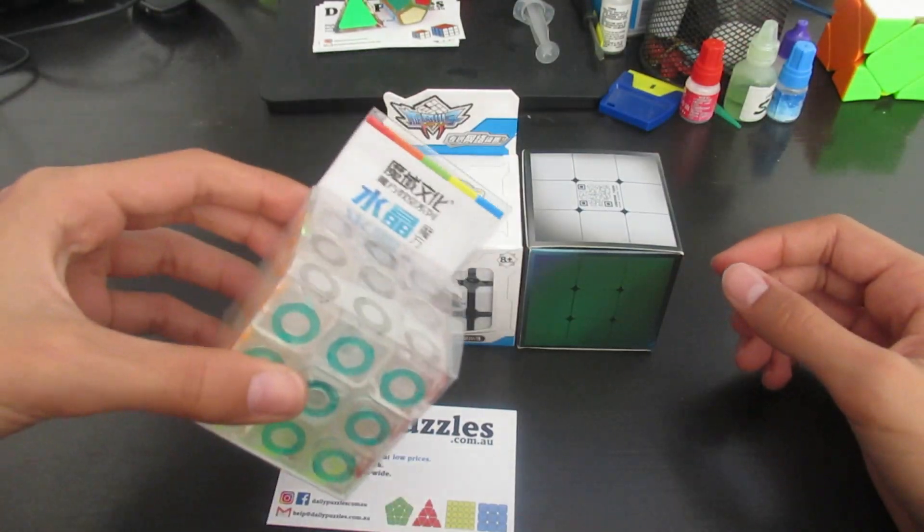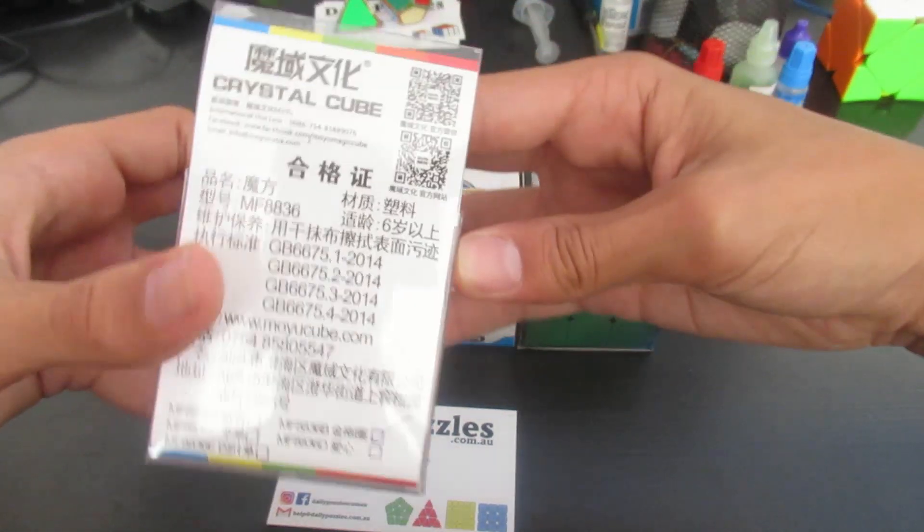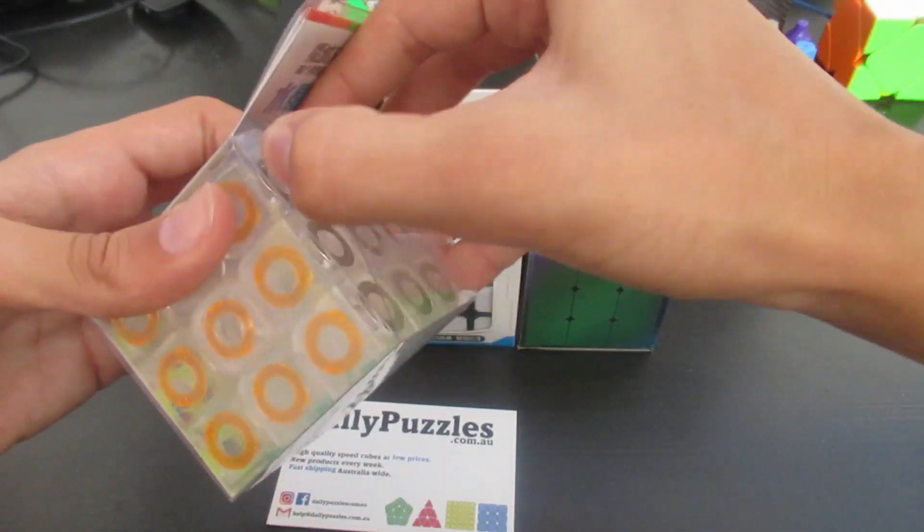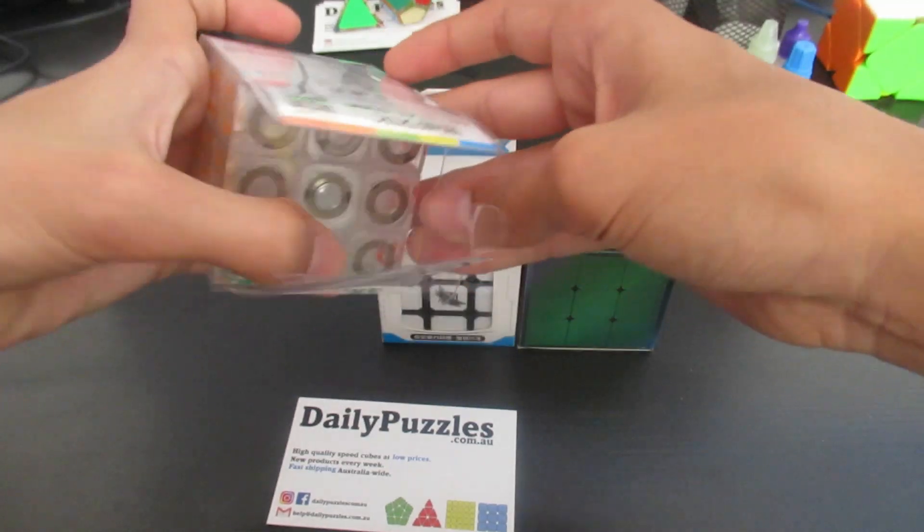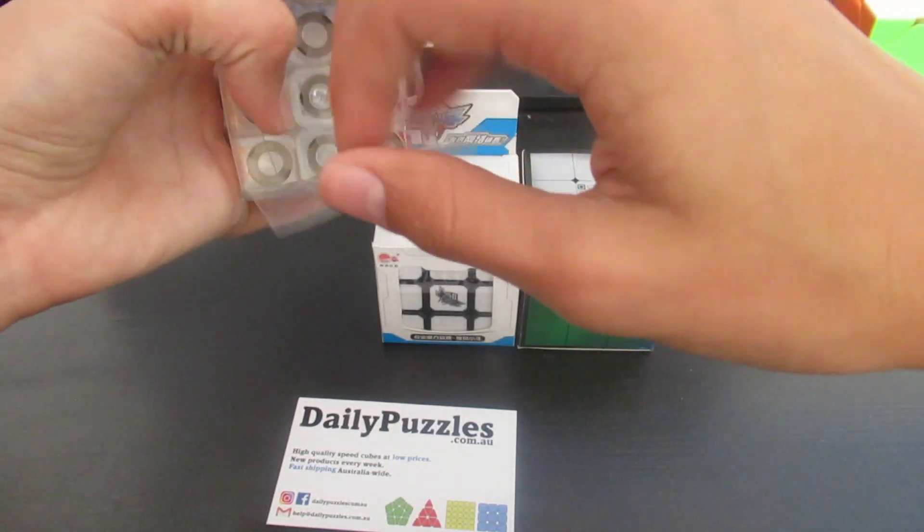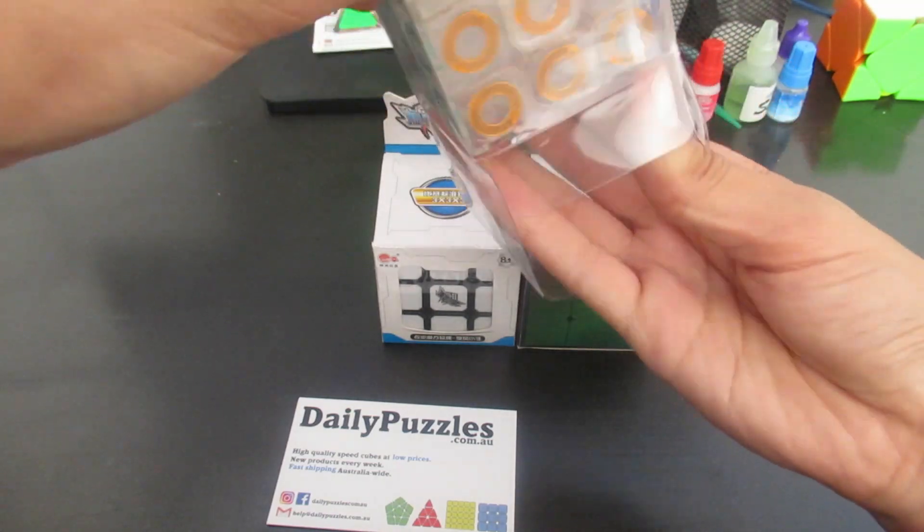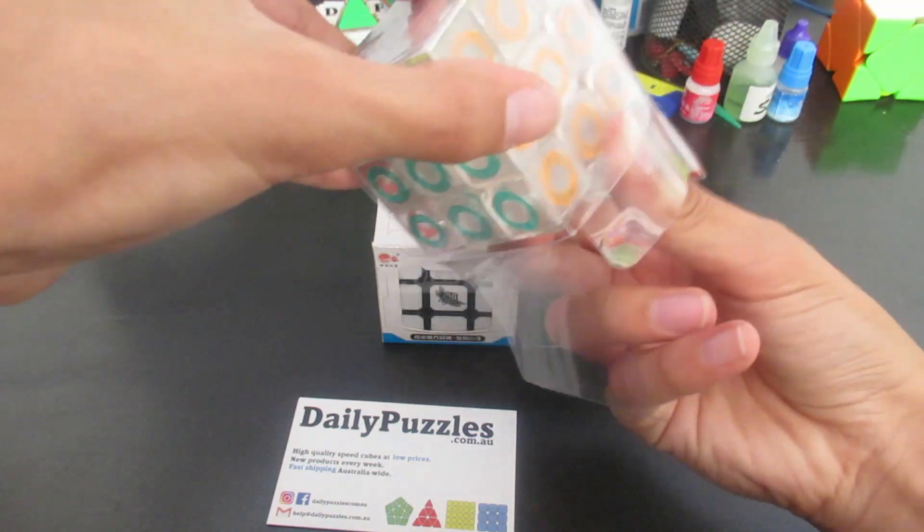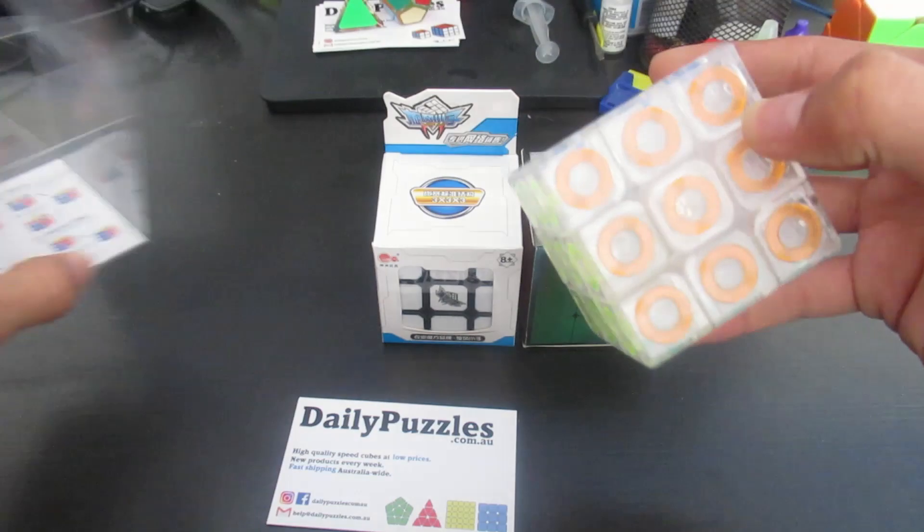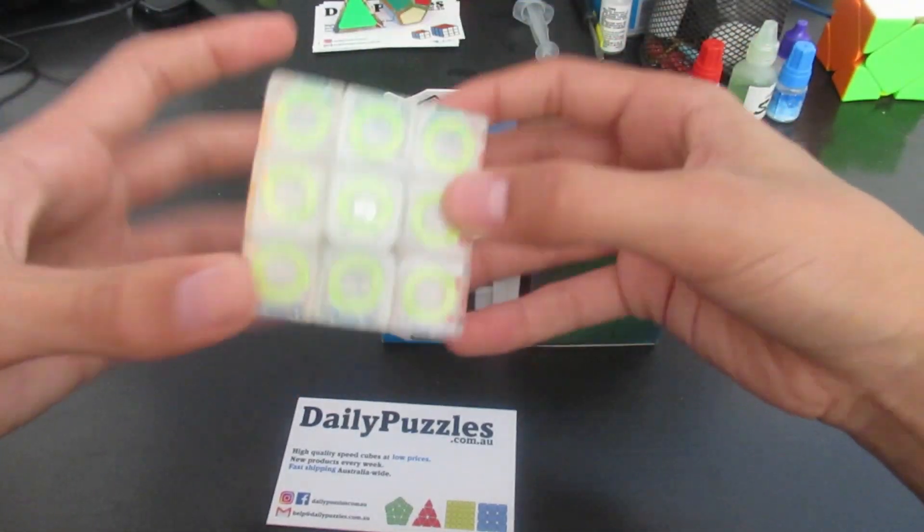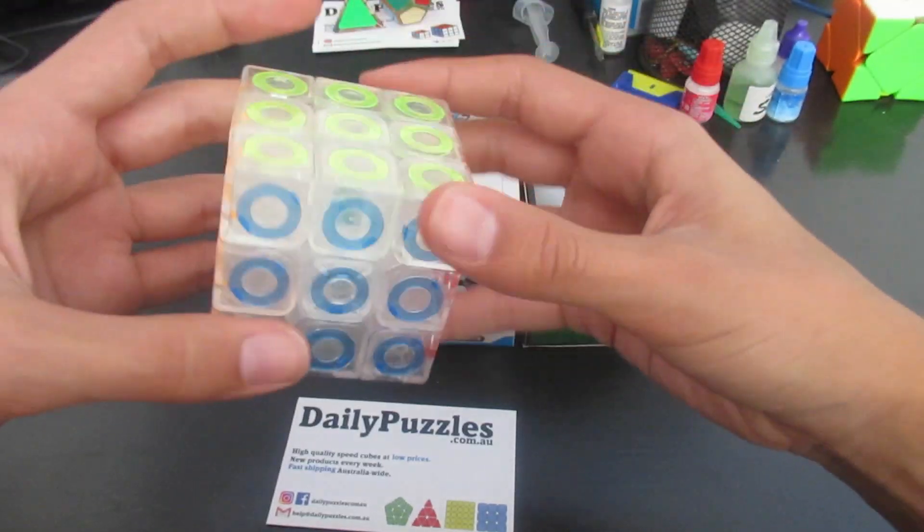So next we'll move on to this puzzle which is also Moyu, which is called the Crystal Cube. So we'll open it up. So as you can see already, this looks like a very interesting 3x3. Just open it up. There we go. Alright, so this entire 3x3 is white, but the stickers resemble the colors.